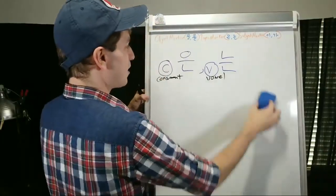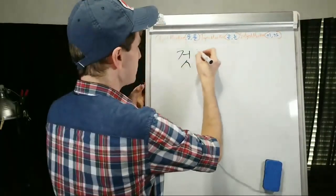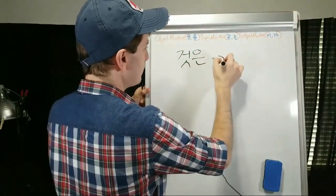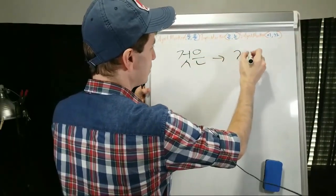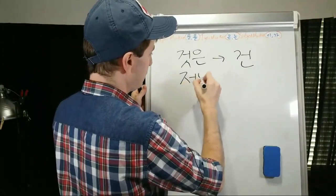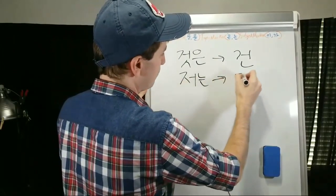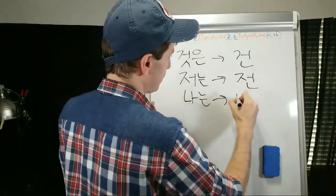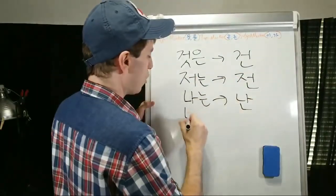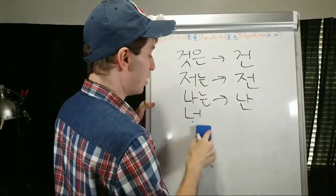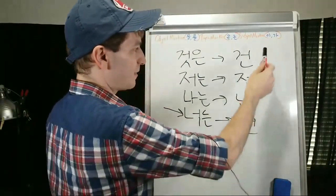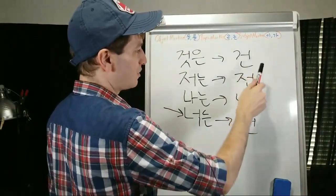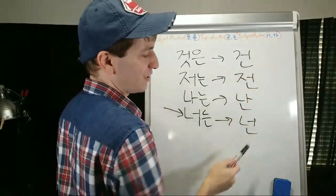Common topic marker contractions: 겉 plus 은 often becomes 건, 저는 often becomes 전, 나는 becomes 난, and 너는 becomes 넌. These are common contractions: 건, 전, 난, 넌.